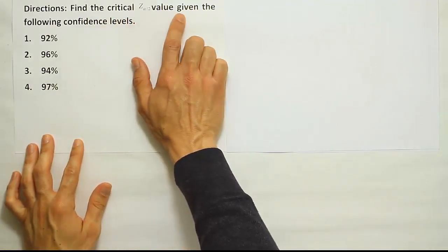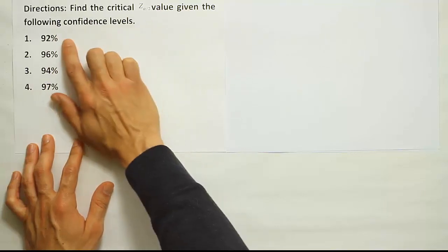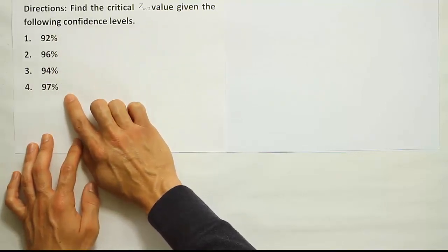Find the critical Z alpha divided by 2 value given the following confidence levels: 92%, 96%, 94%, 97%.